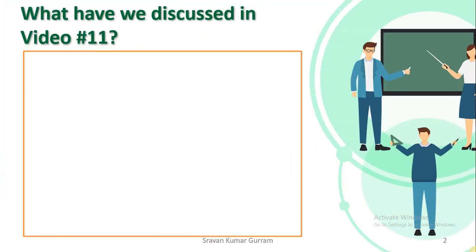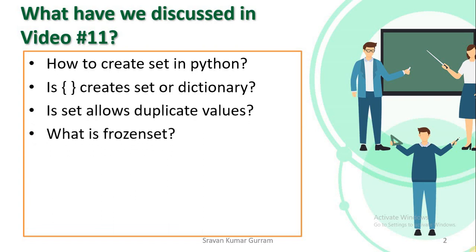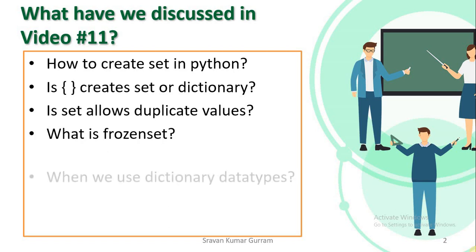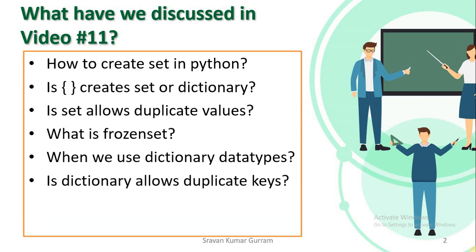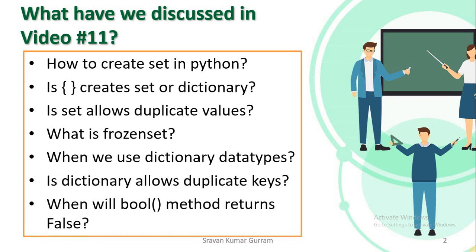Before we start today's session, let us try to recall what we discussed in the last session: how to create a set in Python, whether empty curly braces creates a set or dictionary, whether a set allows duplicate values, what is a frozen set, when we use dictionary data types, whether a dictionary allows duplicate keys, and when the Boolean method returns false. All these were covered in the previous video. If you did not watch that, please watch it and then continue this video for better understanding.